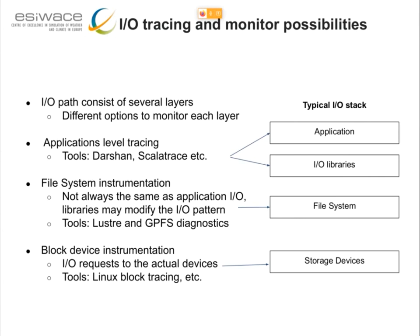If we want to do IO tracing and monitor the IO, there are several places where we can position ourselves to observe this: the application, the IO library, the file system, and ultimately the storage device. Not all layers have the same value — storage device level is more interesting for the storage developer. As an end user, what is really important is not what's going on in a single drive, but what is the cost of the IO in your application. If there is no cost, then IO is not part of the to-do list to improve the application. Darshan is a way to quantify the cost of IO in the application.